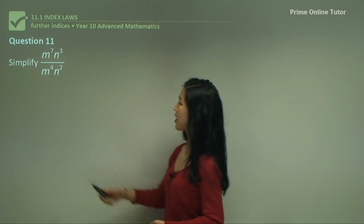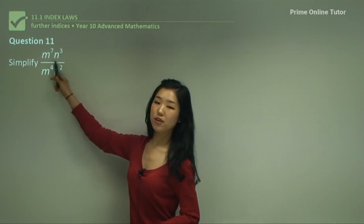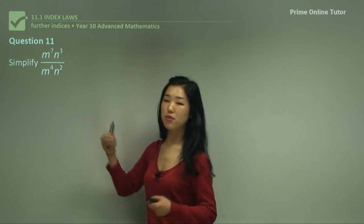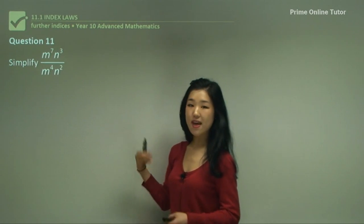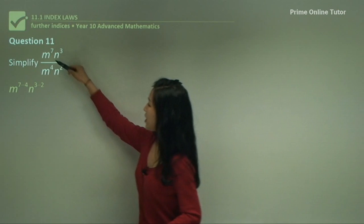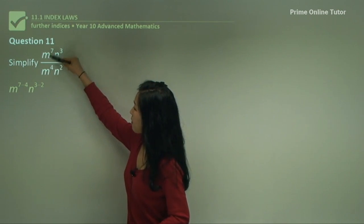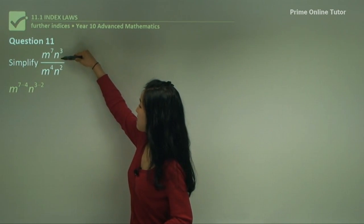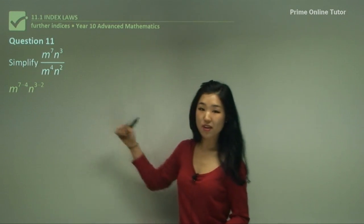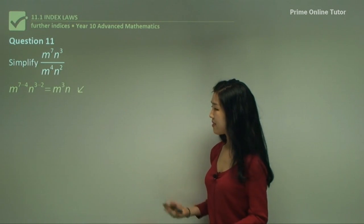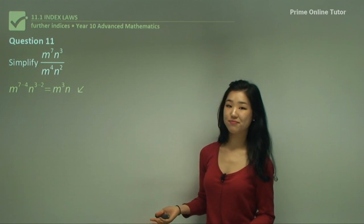Question eleven. We have two different bases, m and n. So we put the m's together and the n's together: m to the power of 7 minus 4, and n to the power of 3 minus 2, because we're dividing so we're subtracting. Simplify and that's what you should get.